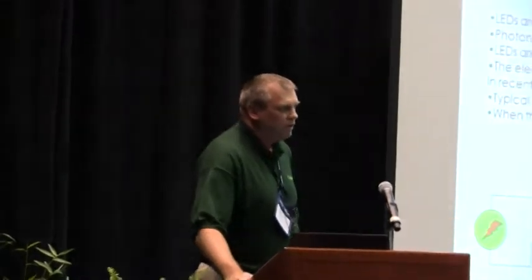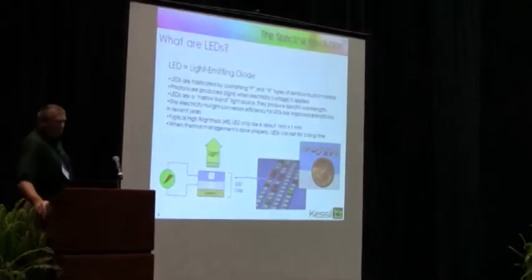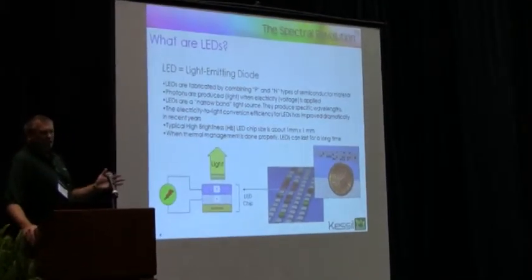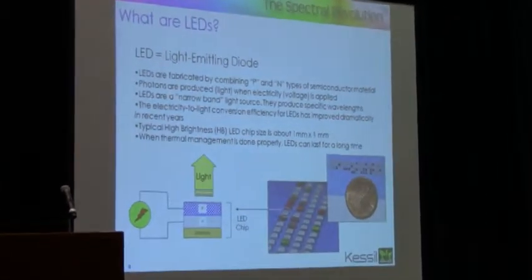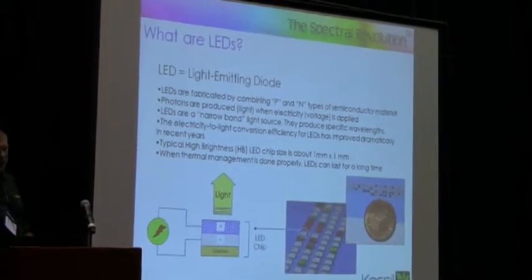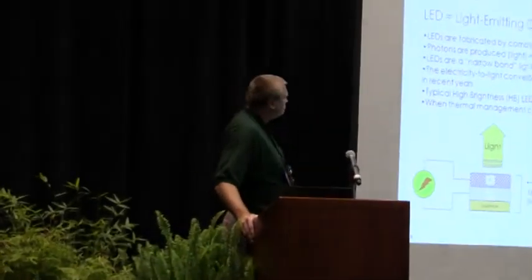A little LED 101. LEDs are light-emitting diodes, fabricated by combining P and N type semiconductor material. They conduct electricity in one direction but not in another. In the case of a light-emitting diode, when it's conducting electricity in one direction, it's also emitting light. The wavelength of light emitted by any particular LED is a function of the materials with which it's made. So by varying the specific mix of materials used to fabricate the active light-emitting area of an LED, we can produce specific wavelengths.